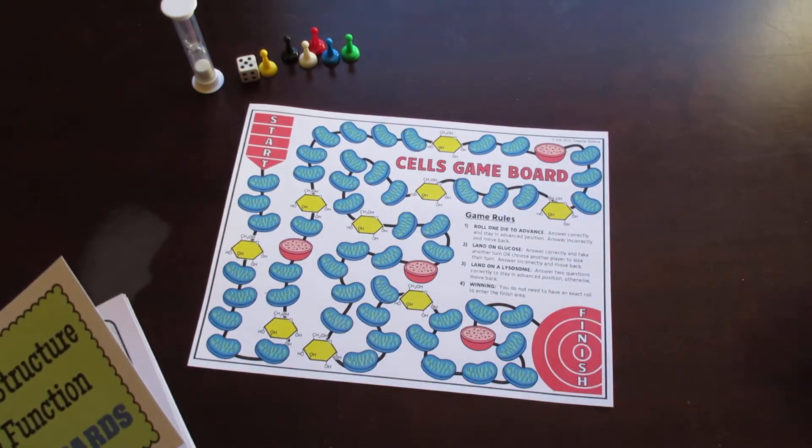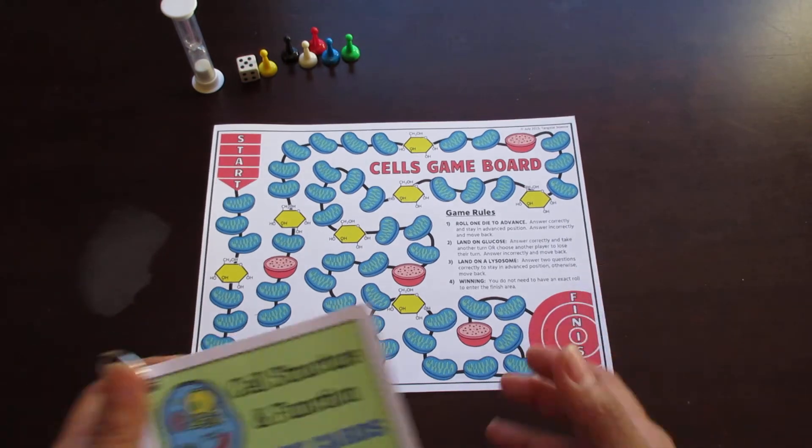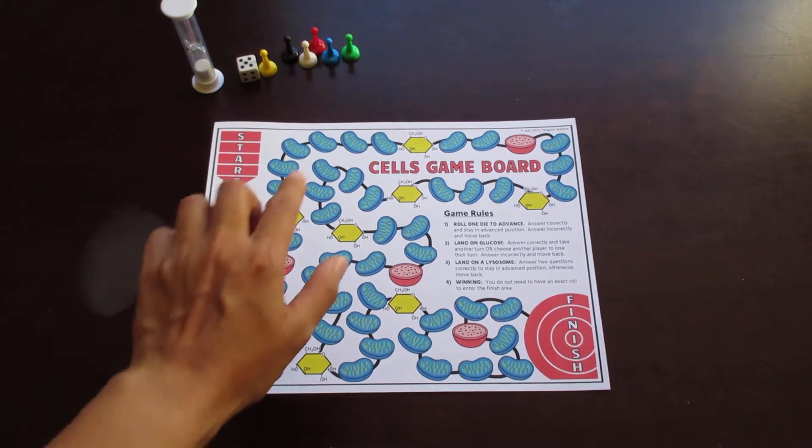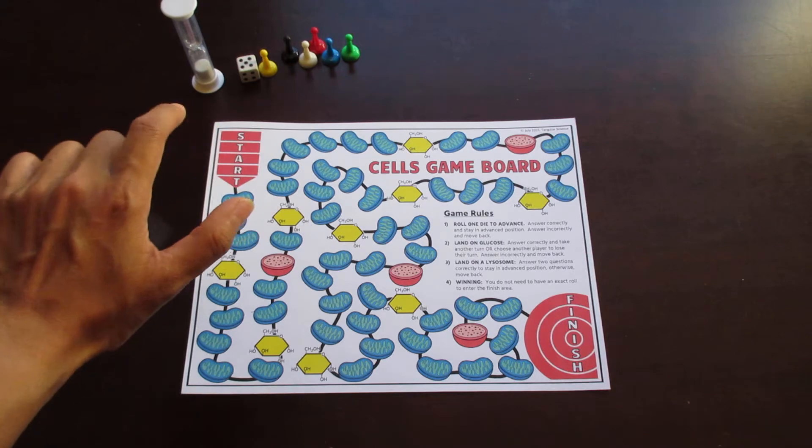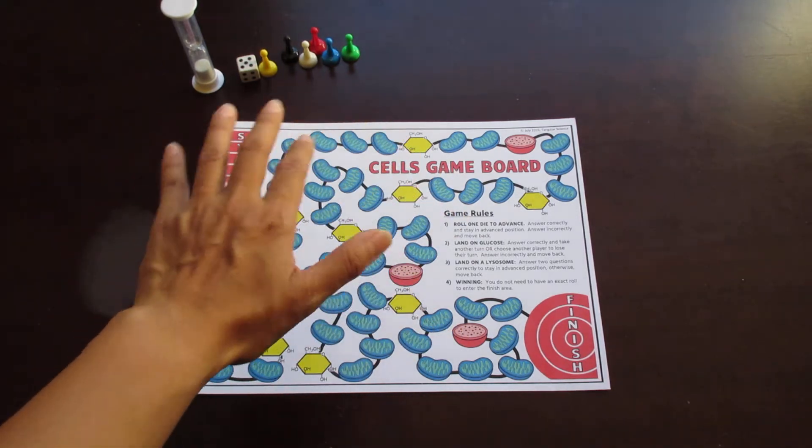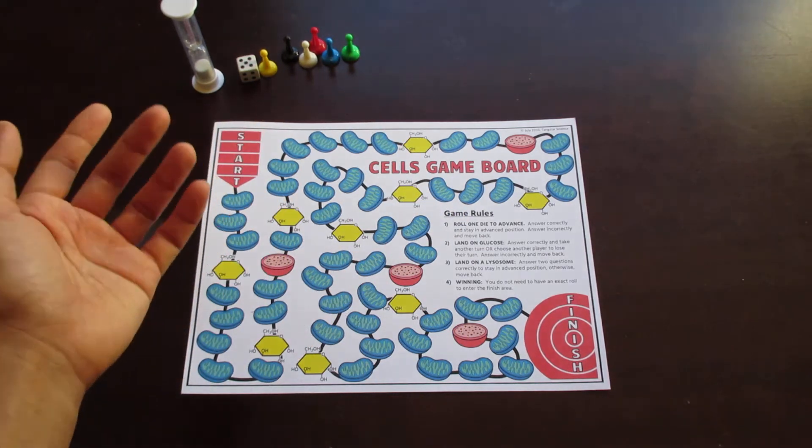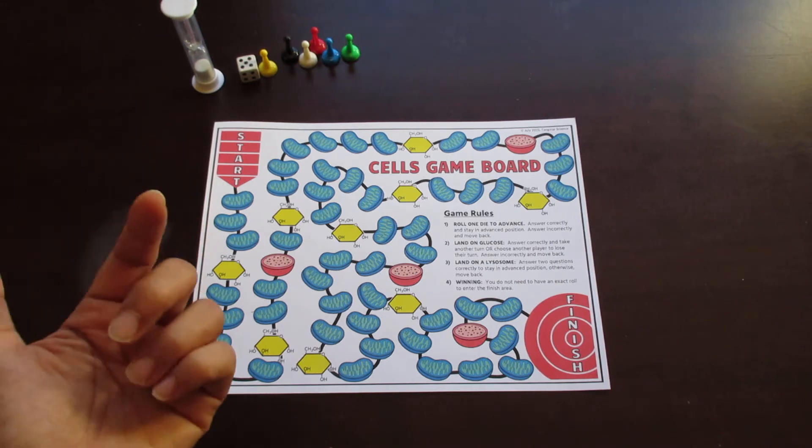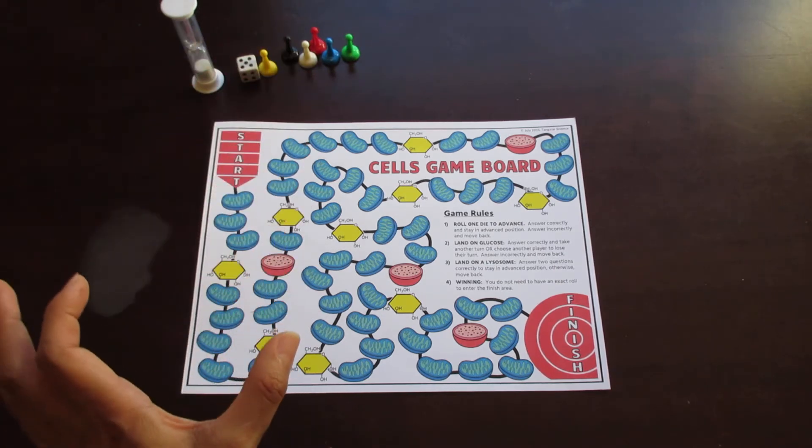All you need to do to make the game board work is to provide game pieces, a die, and a timer. You can use any type of game pieces you have available. When it comes to the timer, you can use your wristwatch or they can use their cell phone timers if you allow them to use that.